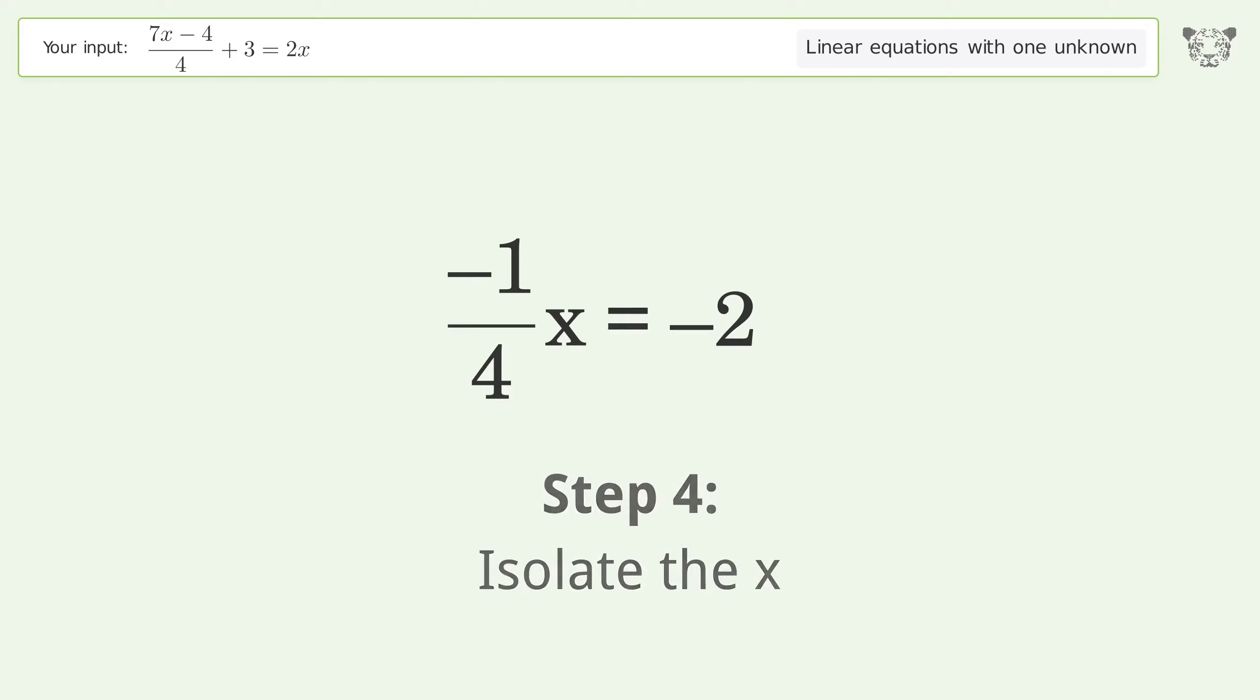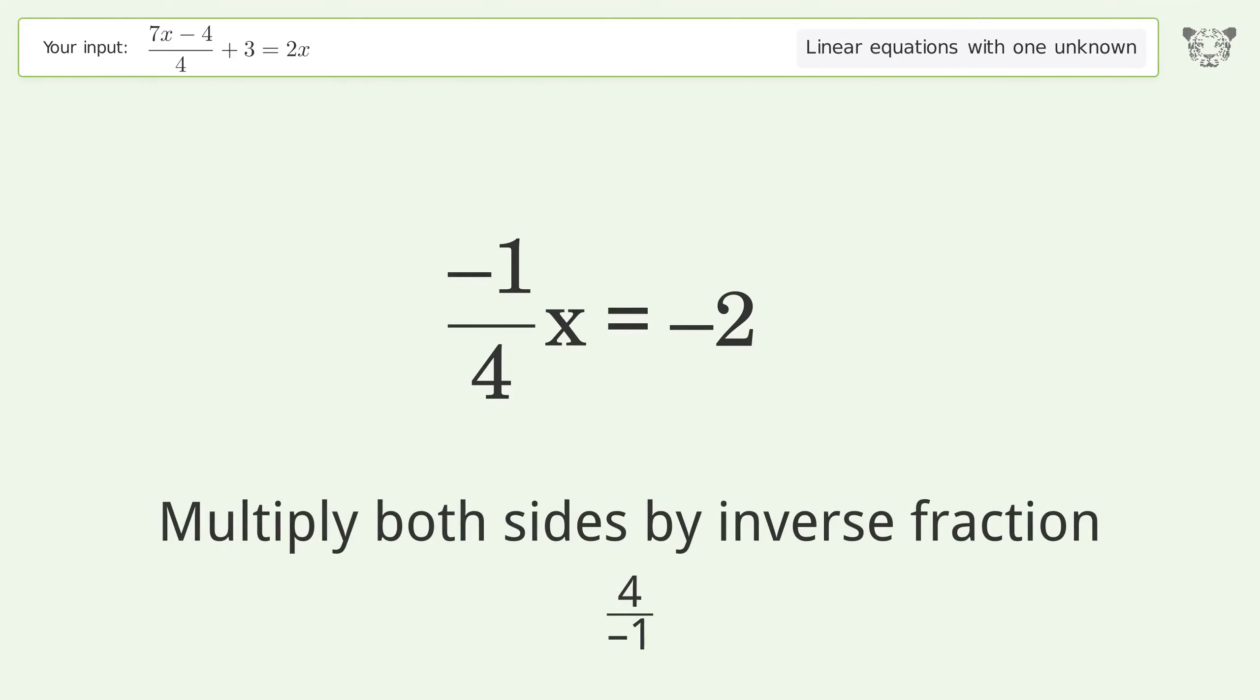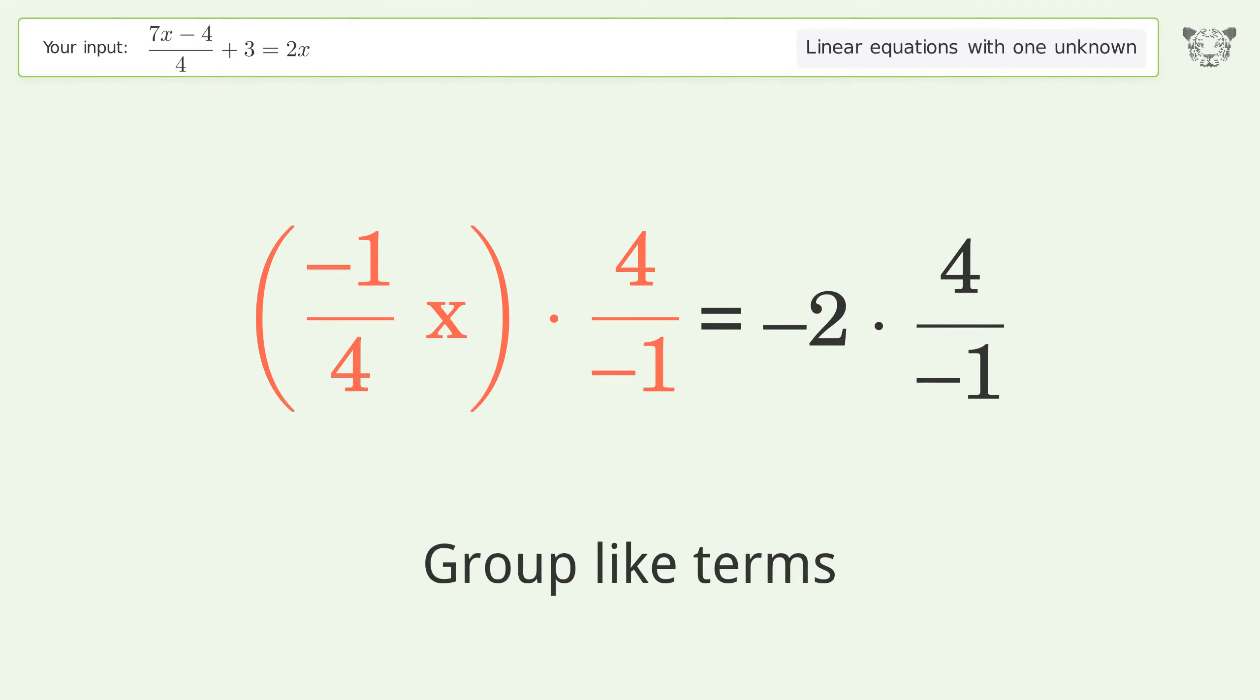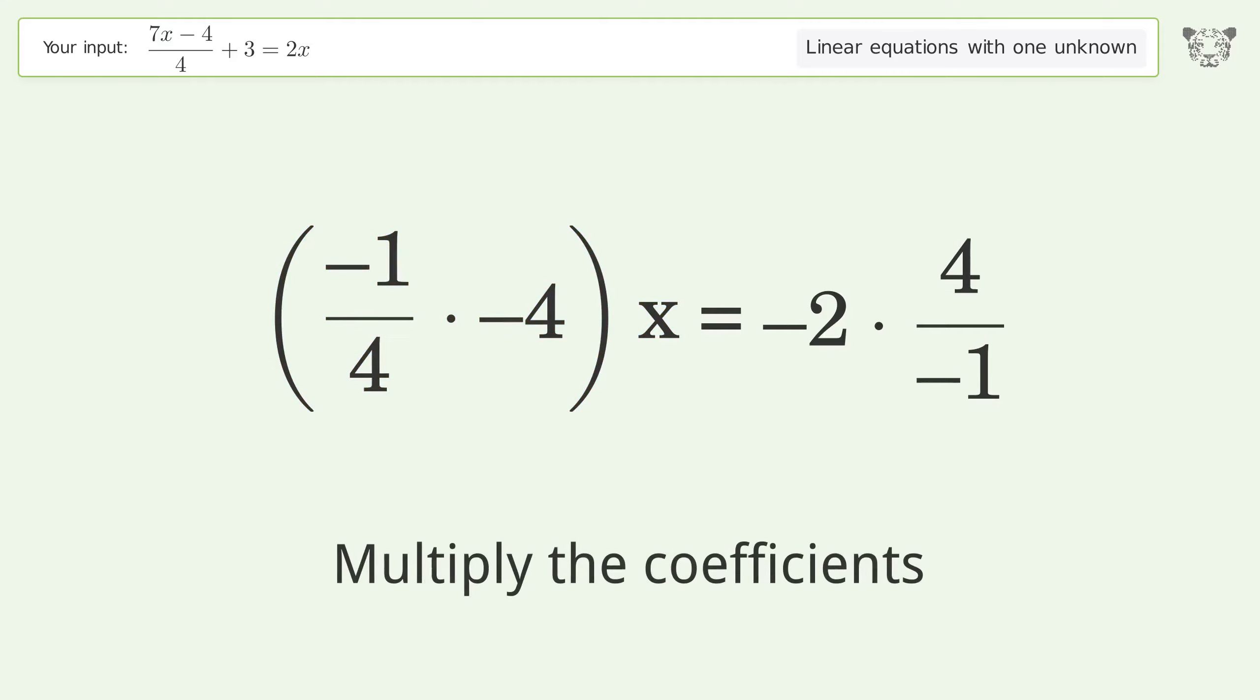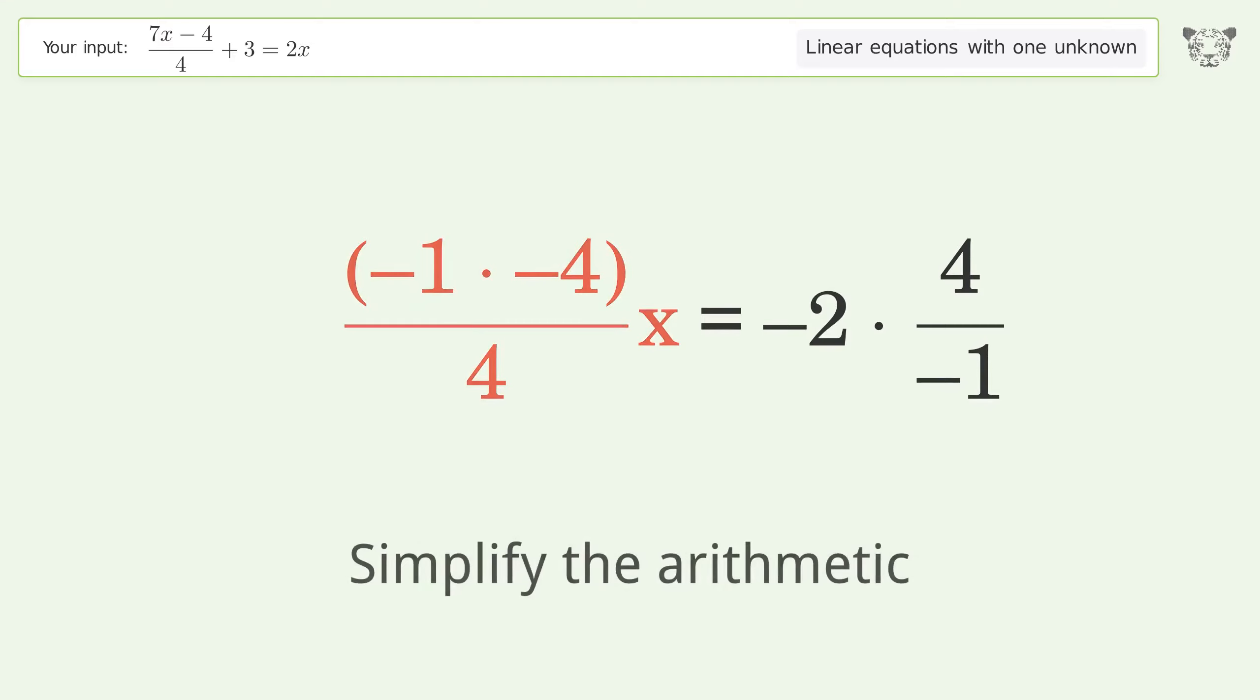Isolate the x. Multiply both sides by inverse fraction 4 over negative 1. Group like terms. Multiply the coefficients. Simplify the arithmetic.